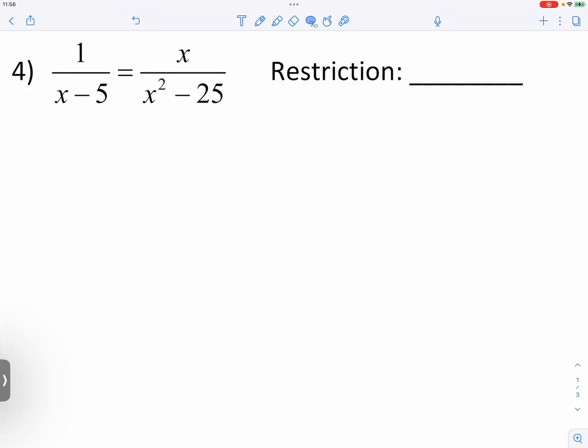Alright, for number four, pretty straightforward I believe, because there's only one thing that will need your attention - that's the denominator of the fraction on the right-hand side. It's clearly x plus 5 and x minus 5.